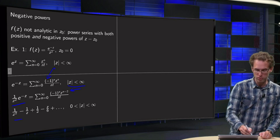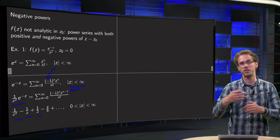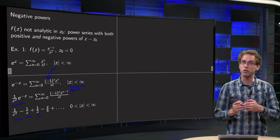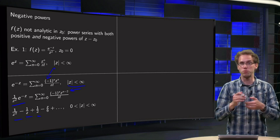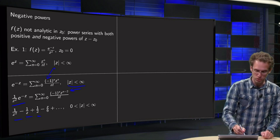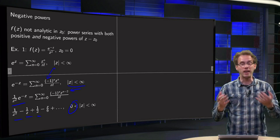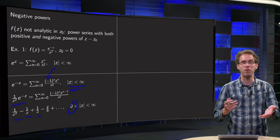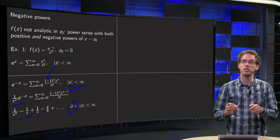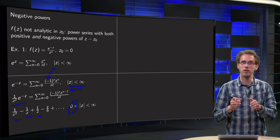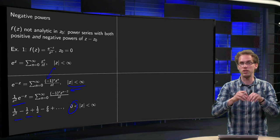Which converges still for z smaller than infinity but of course you cannot get into zero. So now we again have some powers here with negative powers. But now it only converges in an annulus between zero with radius zero and infinity.